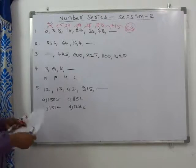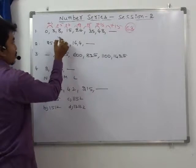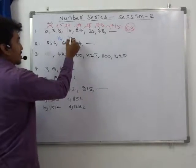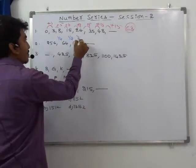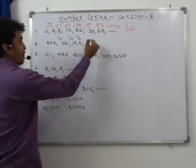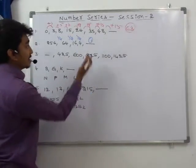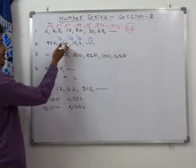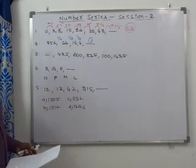For question 2: 256 ÷ 4 = 64, 64 ÷ 4 = 16, 16 ÷ 4 = 4, 4 ÷ 4 = 1. Interpreted as: 1 × 4 = 4, × 4 = 16, × 4 = 64, × 4 = 256. This is a geometric series with ratio 4.